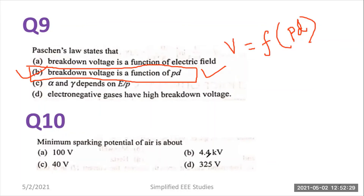Question 10: the minimum sparking potential of air is about — 100 V, 4.4 kV, 40 V, or 325 V? The right answer is 325 V — the minimum sparking potential of air is about 325 V, so go for option D. I have explained this at the time of the sphere gap arrangement, and I will put up the same video link in the description box.